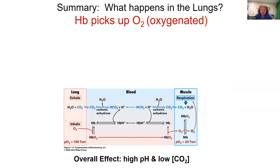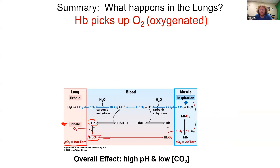When looking at this figure, find a starting place — I start with inhalation. When you inhale, oxygen goes into your lungs; the partial pressure of O2 in your lungs is about 100 torr. In the alveoli, free hemoglobin in oxygen-rich blood binds O2, making HbO2. That HbO2 is transported and delivered to the muscle, where it releases O2 because the PO2 there is about 20 torr.